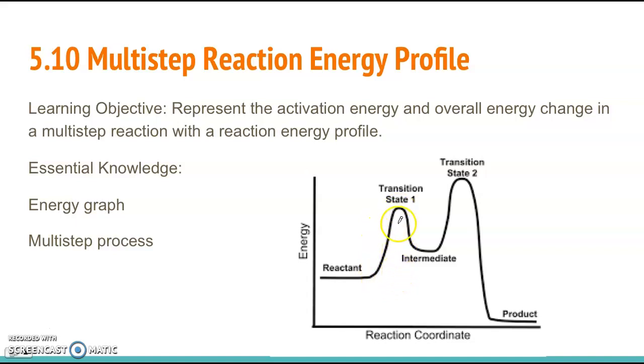So the first hill is going to be the activation energy for the first step. So we can draw that in right here. So the distance from the reactants to the top of that first hill, that's going to be your activation energy for step one in the mechanism. The activation energy for the second step is going to be from this middle section. That's where the intermediate is formed. It's going to be from the height of where you have the intermediate to the top of the second hill. And this is going to be your activation energy for step two in the mechanism.